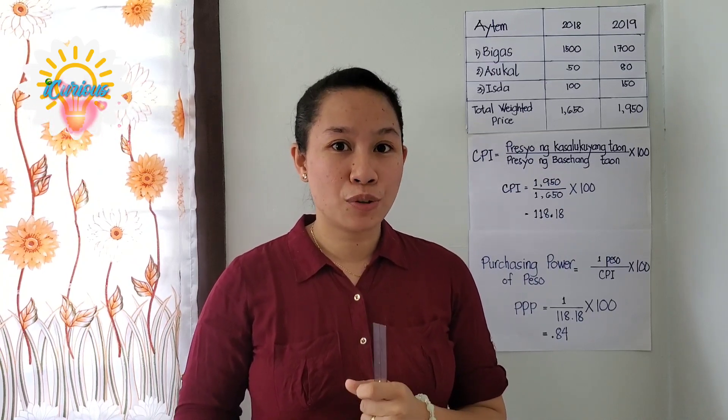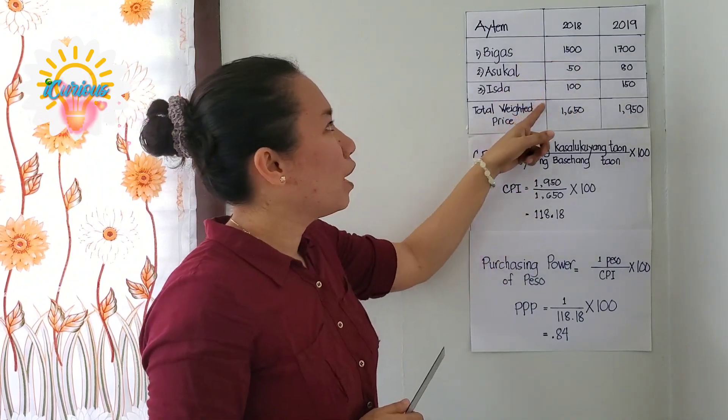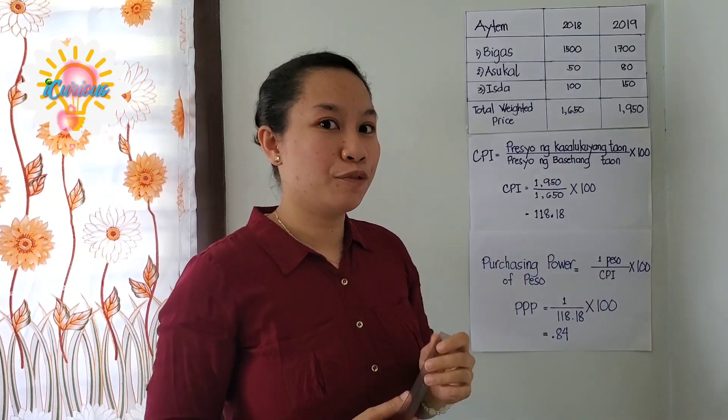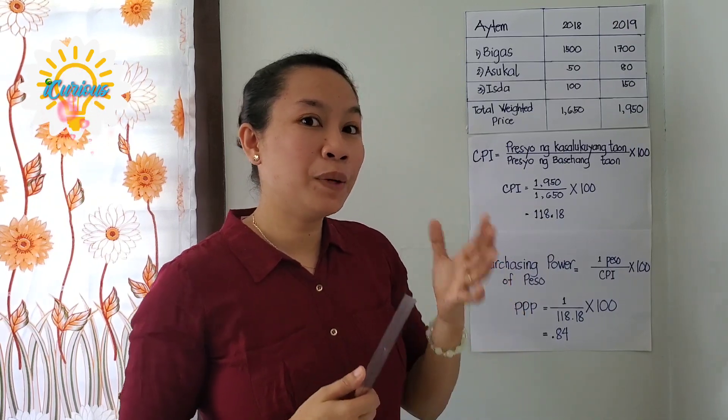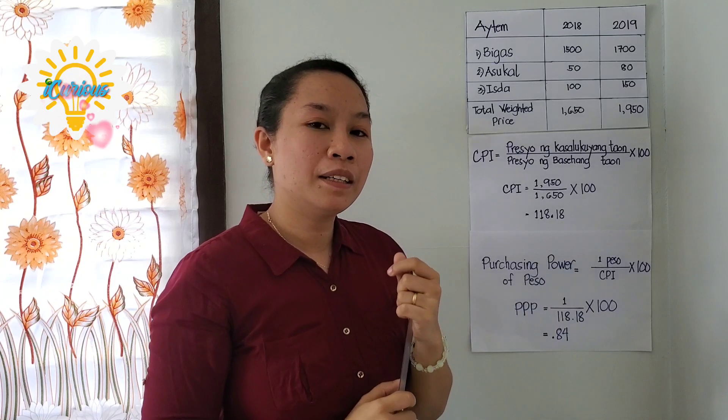Sa pagcompute o pagkuha ng purchasing power of peso, o yung kakayahan ng peso sa pagbili, kailangan muna nating malaman ang consumer price index. Ang consumer price index ay sumusukat sa pagbabago ng presyo ng produkto o servisyo na binibili ng mga consumer. Upang malaman ang consumer price index, naglalagay ako ng mga hypothetical na presyo ng produkto sa taong 2018 at 2019. Ang mga item na inilagay ko, na karaniwang nasa basket of goods o mga pangunahing pangangailangan ng mga tao, ay: una, bigas; pangalawa, asukal; at pangatlo, isda.